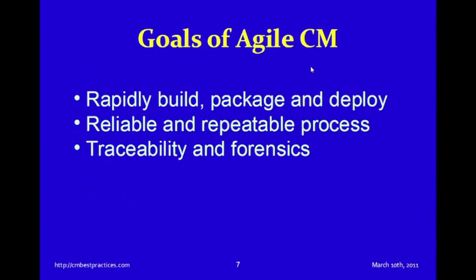In an agile CM setting, we have some very specific and important goals. We want to be able to rapidly build, package, and deploy our applications. We need a reliable and repeatable process. In agile, there's a de-emphasis on heavy processes, but we still need a reliable way to build our applications. We also need traceability and what I like to refer to as forensics — if you've got an application in production, you need to be able to tell when it was promoted to production and exactly what version it was.